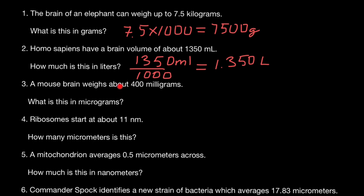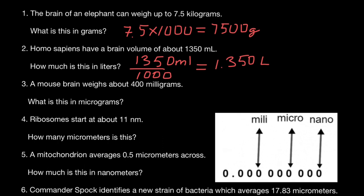Next question: a mouse brain weighs about 400 milligrams. What's this in micrograms? Take a look at this picture — here we have conversion factors, for example milli to micro. Micro is 1,000 times smaller than milli. Milli, as you see, is one-thousandth of something — it can be milligrams or milliliters. Milligrams: milli means one-thousandth of a gram. Milliliter is one-thousandth of a liter.